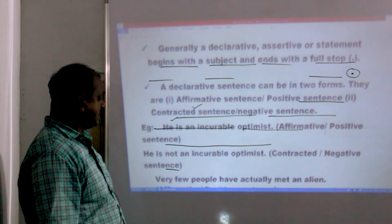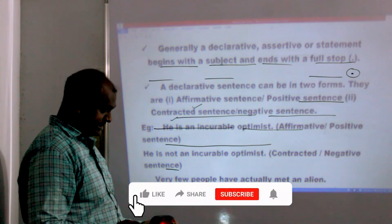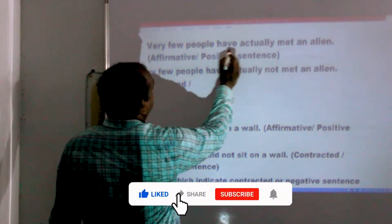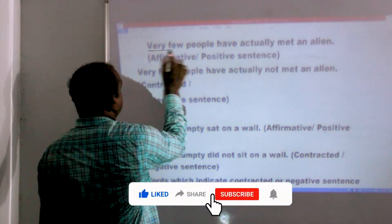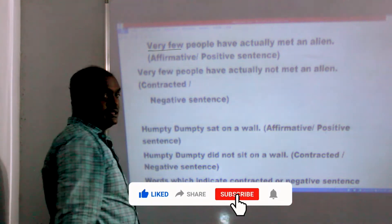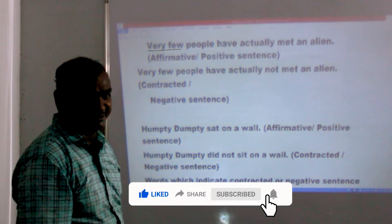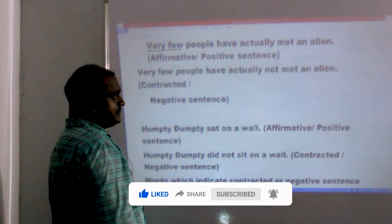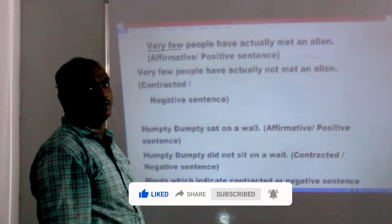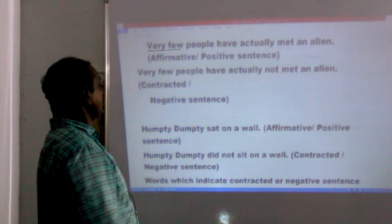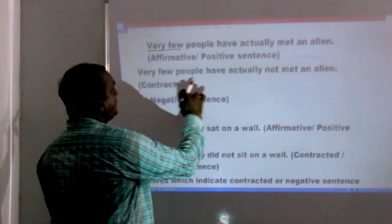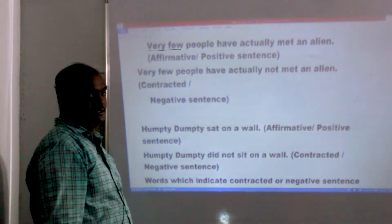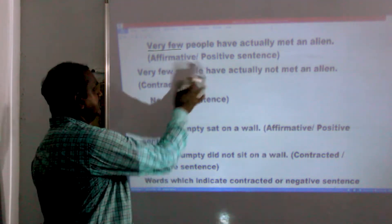Contracted or negative sentence. For example: 'Very few people have actually met an alien' — that is a positive sentence. 'Very few people have actually not met an alien' — that can be considered a positive or negative sentence.